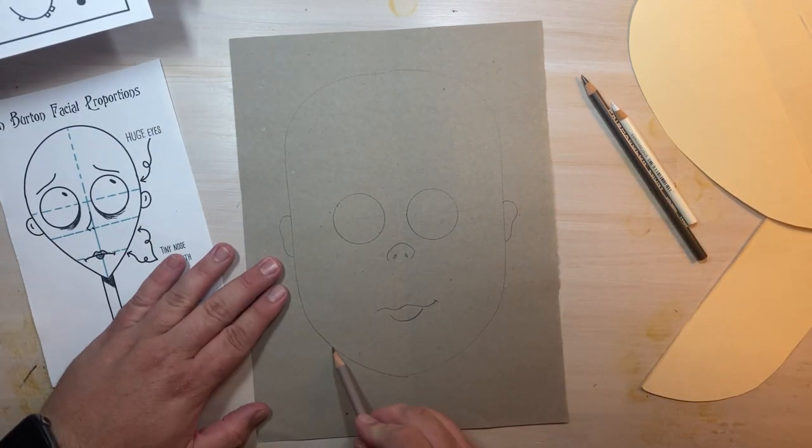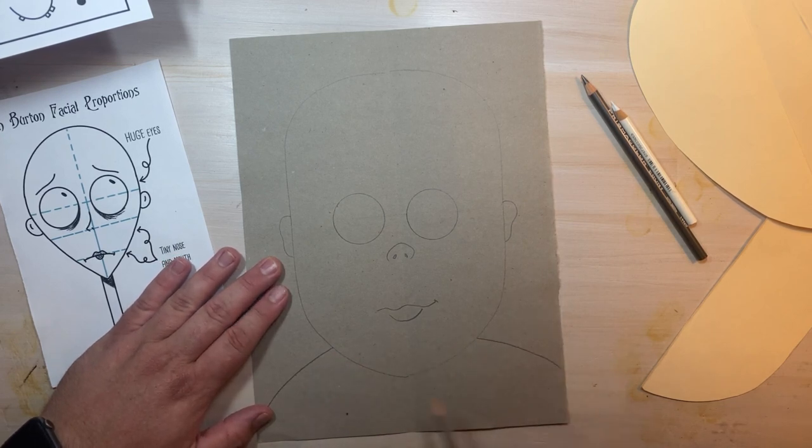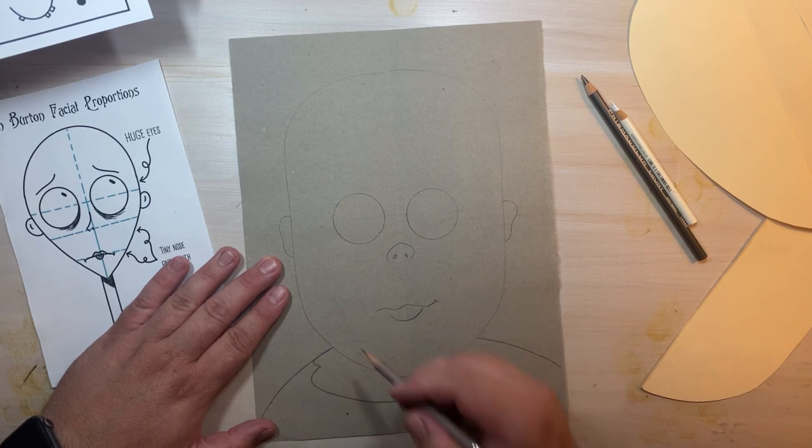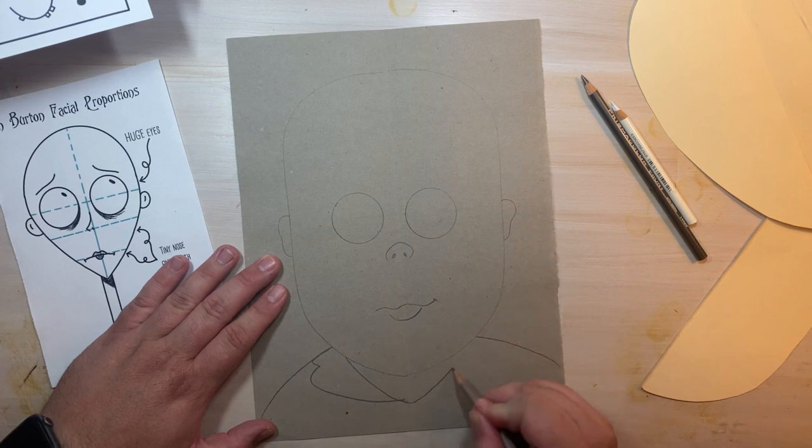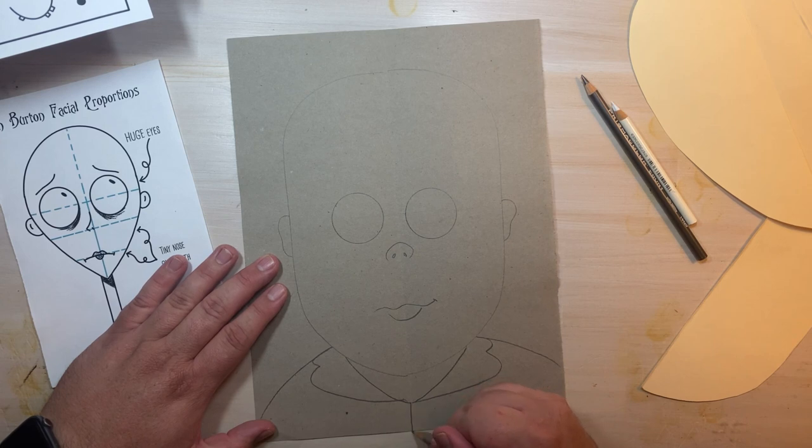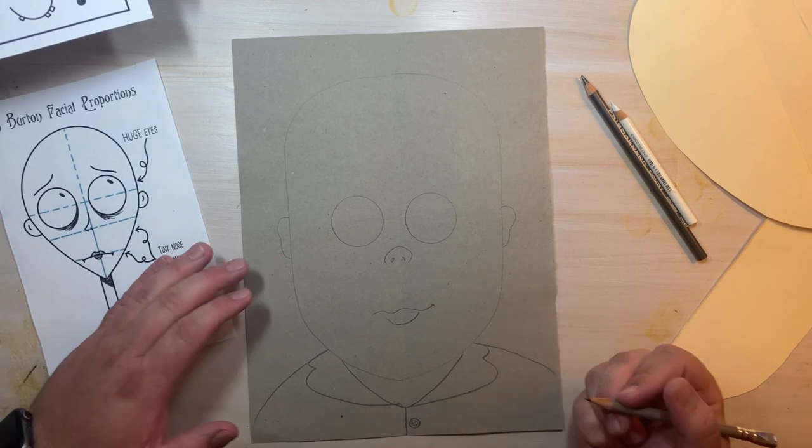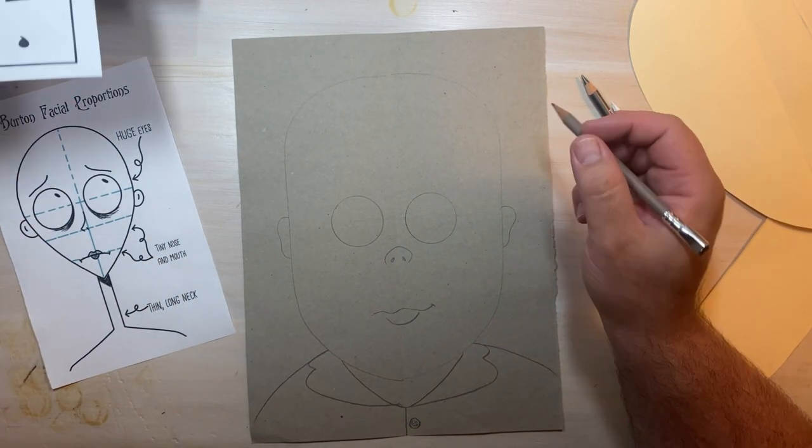For me I'm choosing to not do a neck and instead show the shoulders, the collar of my shirt. You can do a long thin neck in the style of Tim Burton characters. But sometimes they don't show their neck. You have to choose what's right for you. Don't forget details like buttons with button holes. Classic Tim Burton stripes. And other accessories.